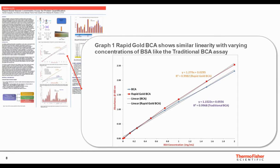From this graph, we see that we get the same signal intensity and the same linearity with the Rapid Gold BCA, shown in red, as with the traditional BCA, shown in blue. The only difference is that the Rapid Gold BCA was done at room temperature in 5 minutes, while the traditional BCA was done at 37°C for 30 minutes — a way shorter time to results.